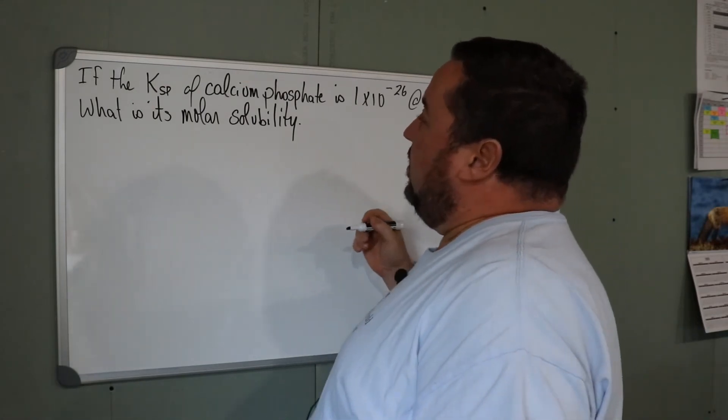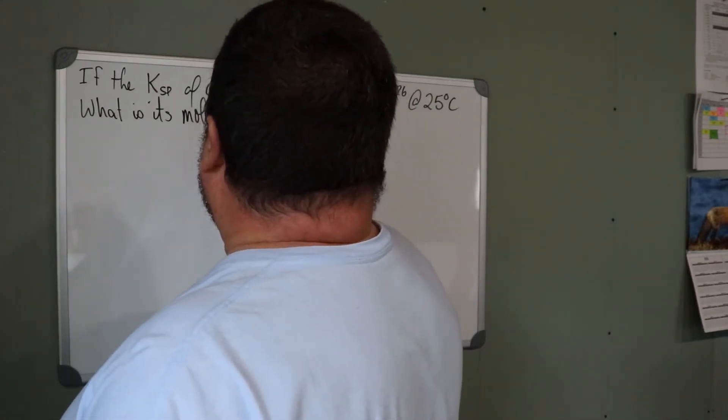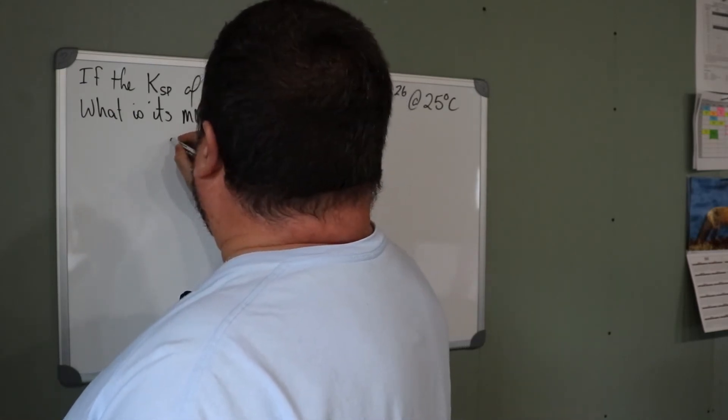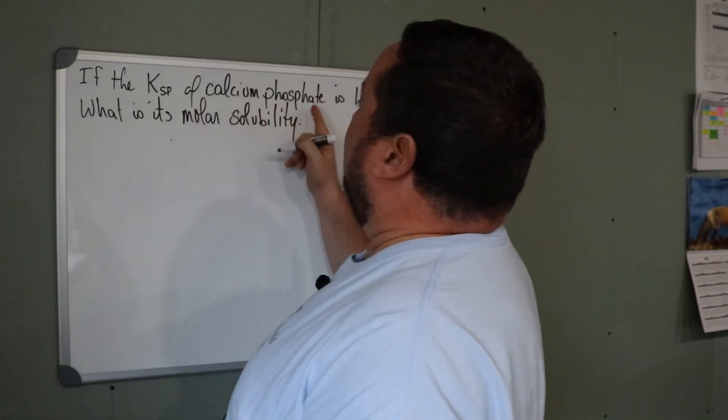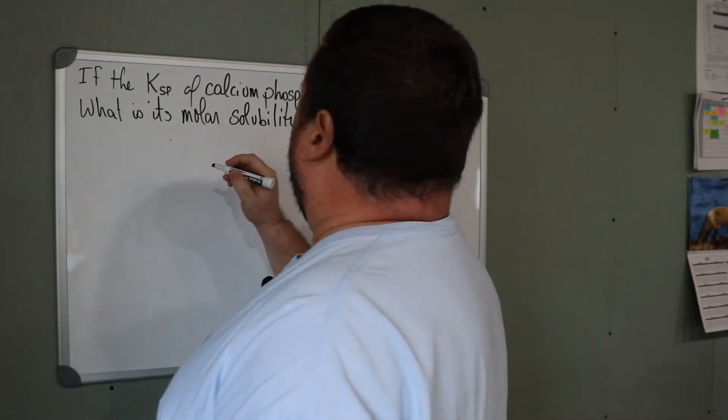Once again, we need to consider the dissociation equation for calcium phosphate. We know that calcium ions are 2+ and phosphates are 3-.